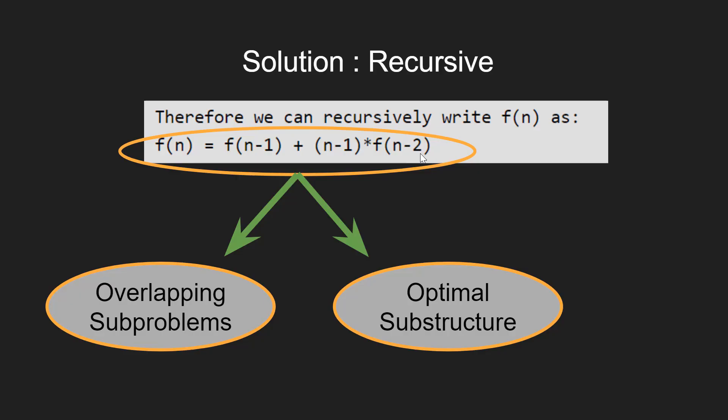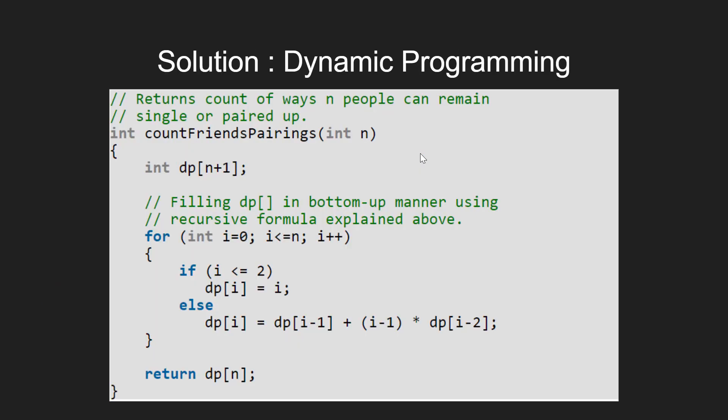Let us look at the implementation using tabulation. We have a function named countFriendsPairings which takes integer n as the argument and returns the number of ways those n friends can arrange themselves.